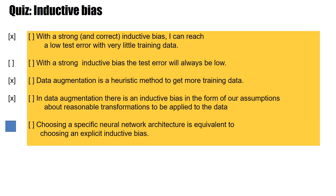Final statement. Choosing a specific neural network architecture is equivalent to choosing an explicit inductive bias. Think about this. And yes, this is correct. And this will be the point of the lecture today.